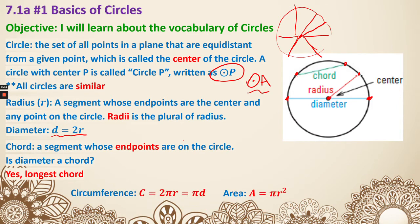Then we have circumference and area - these are the formulas. Circumference, we use letter C, and that is 2πR. Also, since 2R is basically D, we can also write it as πD. For area, it is A equals πR squared.